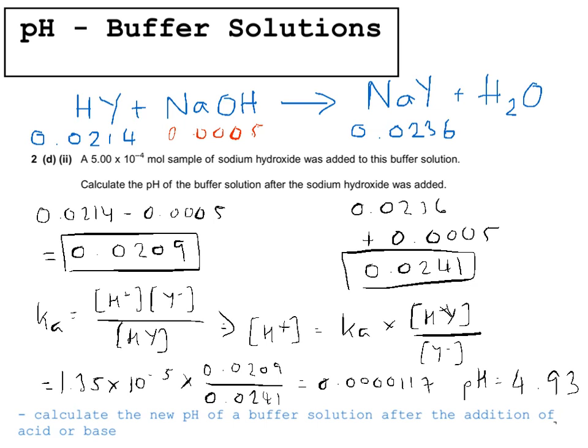If you were to add acid instead, you'd do the opposite: take away moles from the salt and add to the acid, because the added acid reacts with the salt to produce more acid. Now please have a go at the weekly questions that cover buffer solutions.